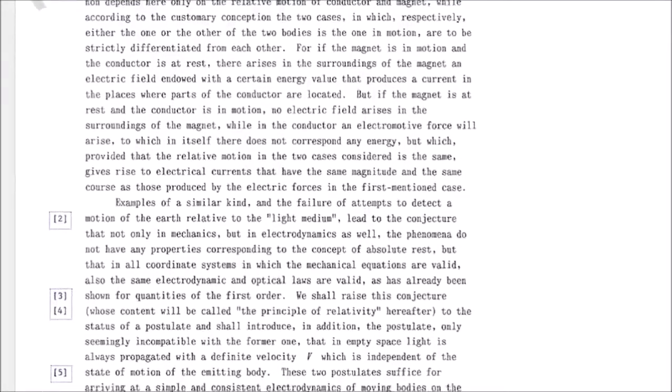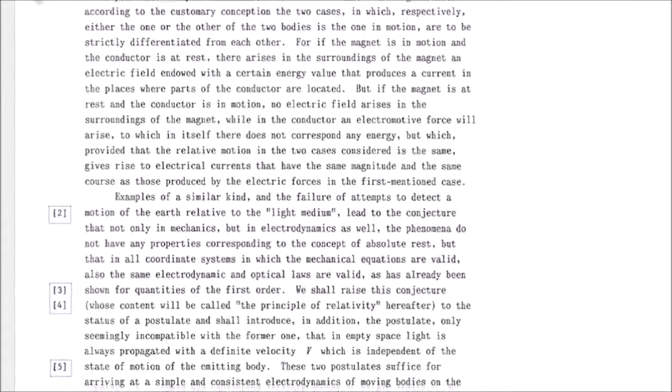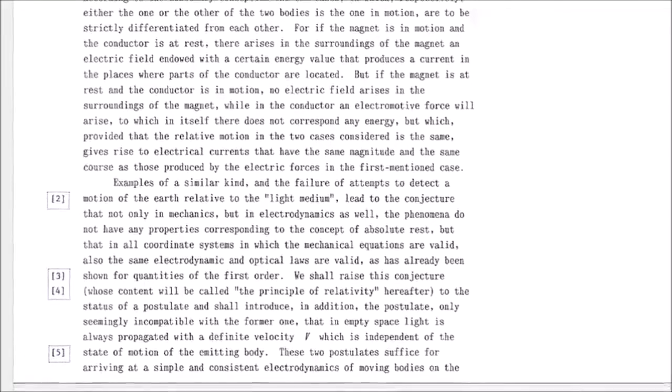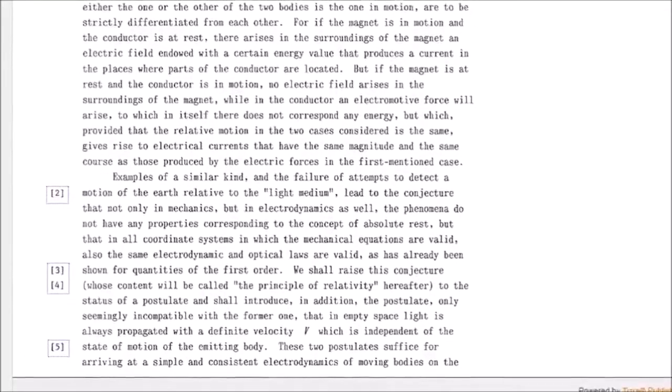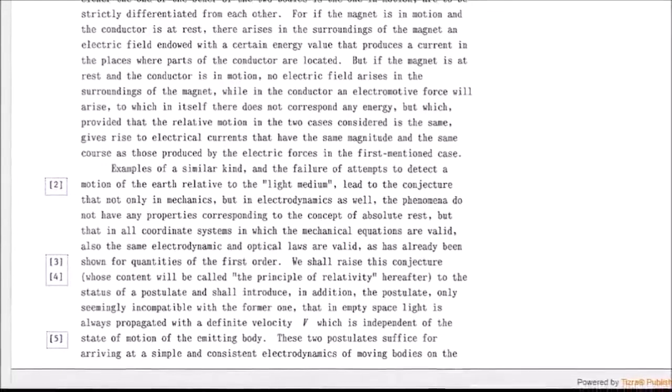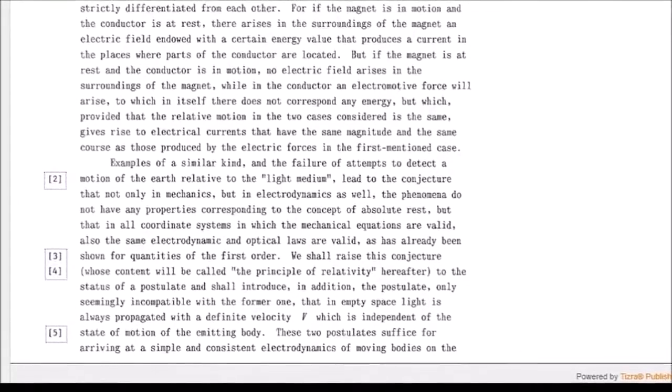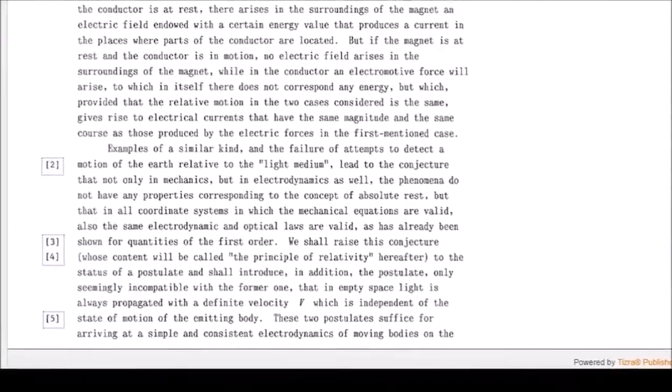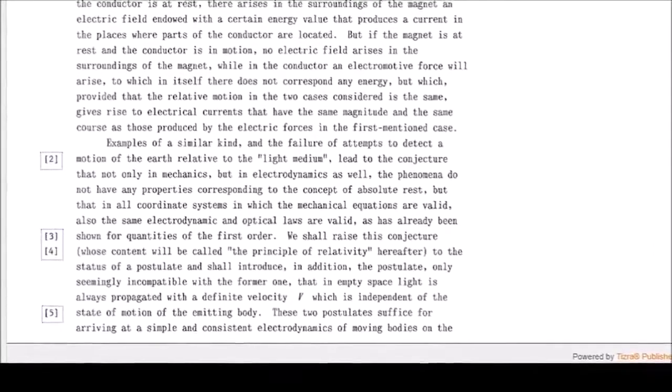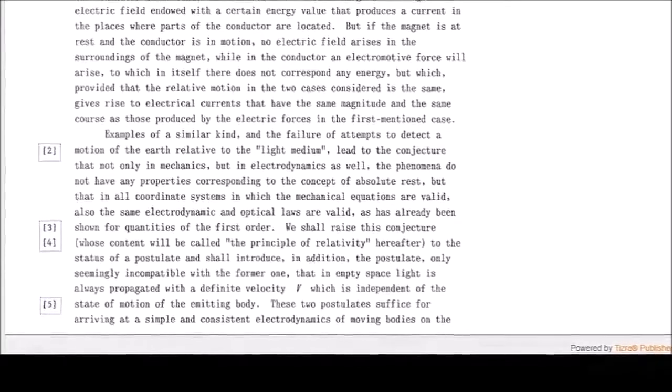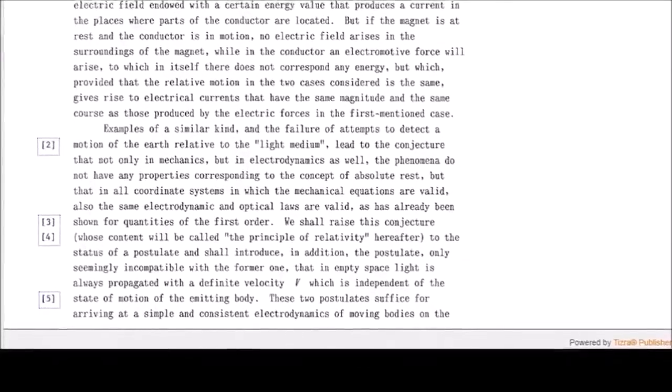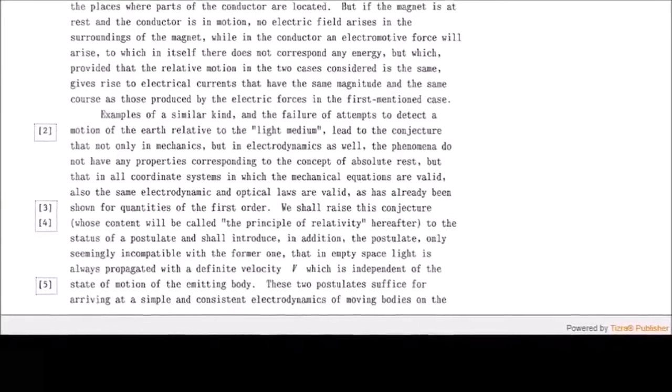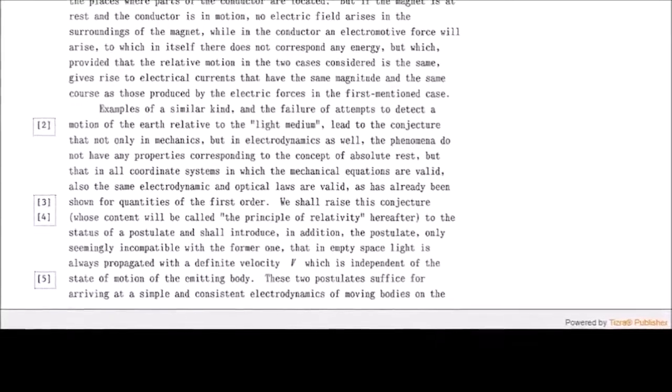For if the magnet is in motion and the conductor is at rest, then arises in the neighborhood of the magnet an electric field with a certain definite energy producing a current at the place where parts of the conductor are situated. But if the magnet is stationary and the conductor is in motion, no electric field arises in the neighborhood of the magnet. In the conductor, however, we find an electromotive force, to which in itself there is no corresponding energy, but which gives rise, assuming equality of relative emotion in the two cases discussed, to electric currents of the same path and intensity as those produced by the electric forces in the former case.